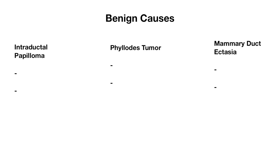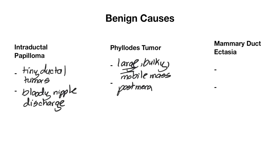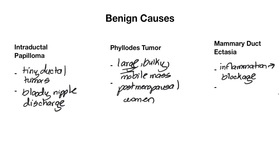The next three causes have features that can make them appear malignant, although they are benign. The intraductal papilloma is a tiny ductal tumor that can present with bloody nipple discharge — it's actually the number one cause of bloody nipple discharge. The phylloides tumor is also a high yield topic; it presents as a very large, bulky, and mobile mass and is often seen in post-menopausal women. It's usually benign but some can be malignant. Mammary duct ectasia involves inflammation in the duct leading to blockage and dilation, presenting with a subareolar mass and sticky greenish or yellowish discharge.